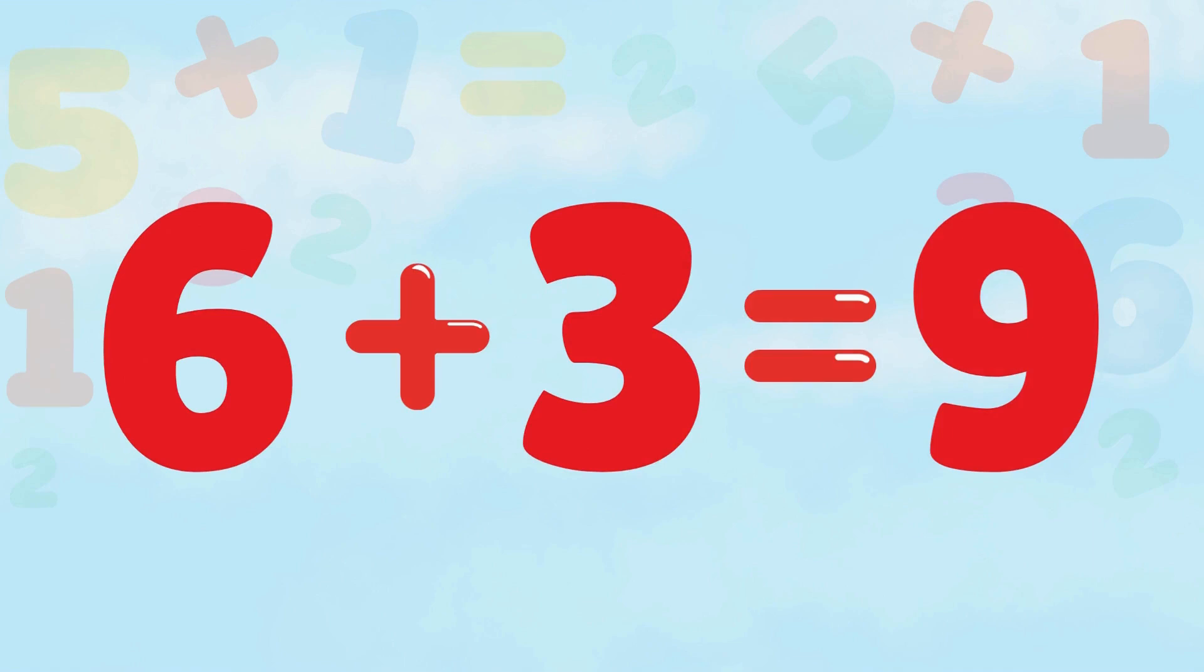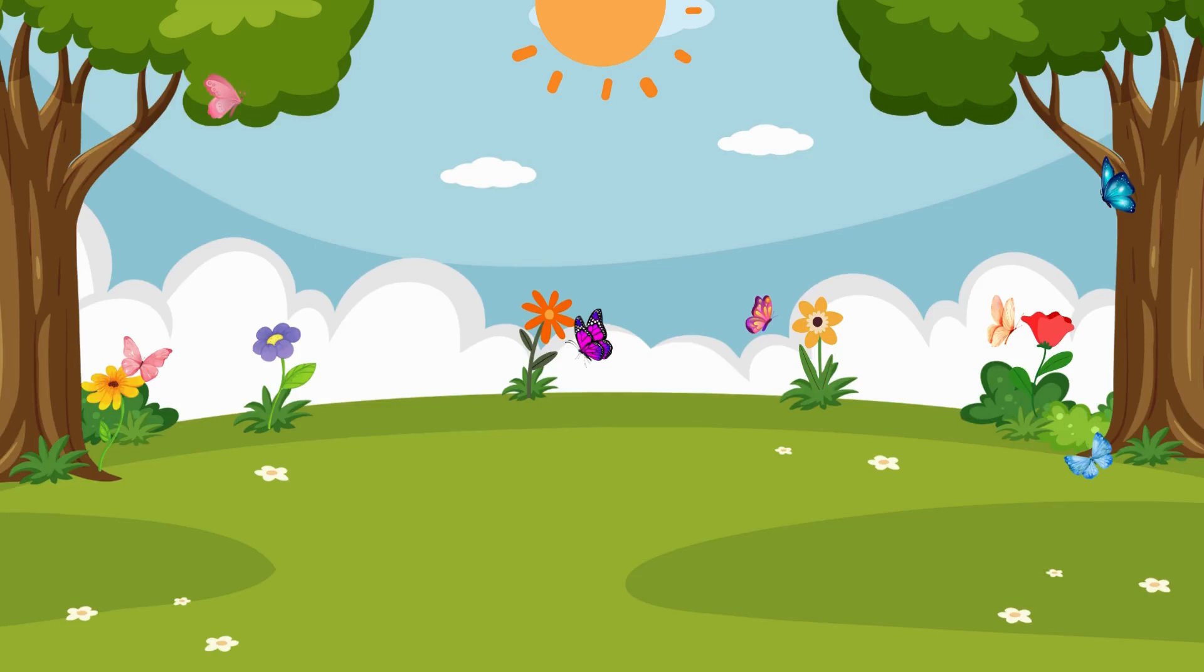We popped a 6 and a 3. Let's add them up. 6 plus 3 equals 9. Wow, you are so smart. Let's add 9 kids playing to our picture.